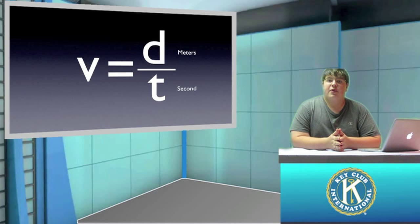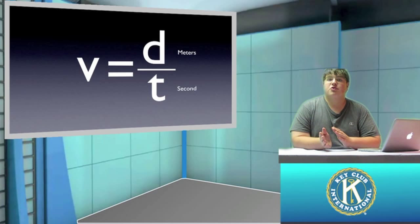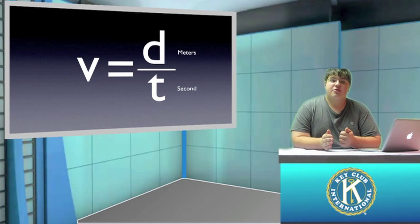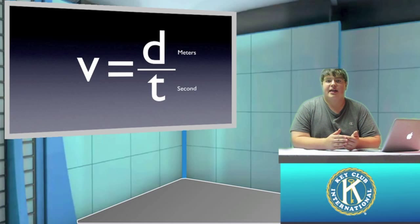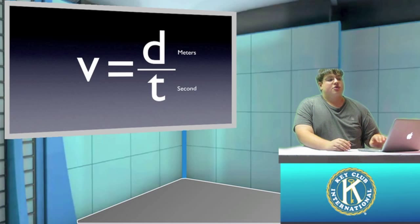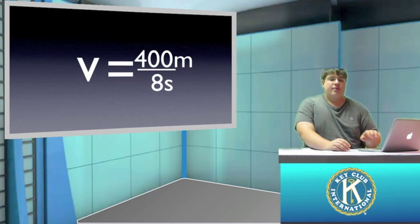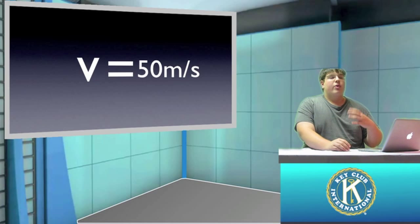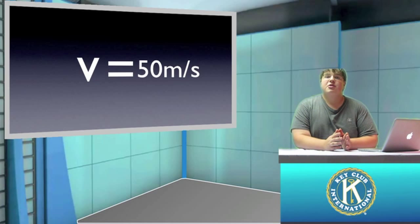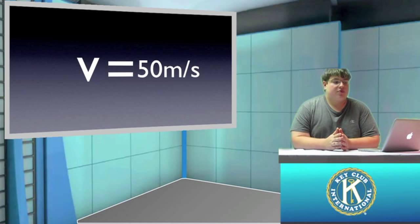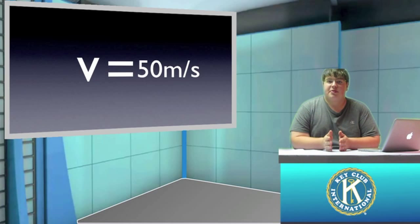Just as a conversion, a quarter of a mile is 400 meters. So we know that the dragster is covering 400 meters in 8 seconds. We plug in 400 divided by 8, and we find that the average velocity of this dragster is 50 meters per second.